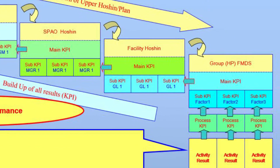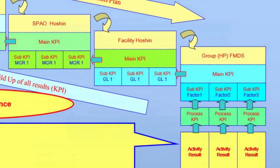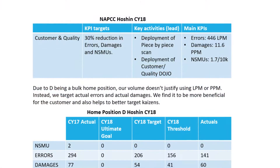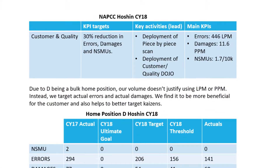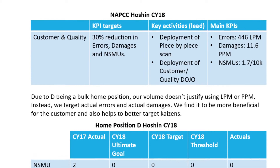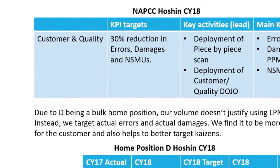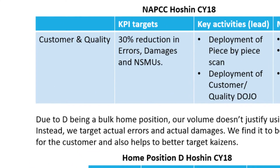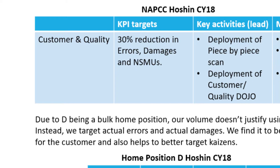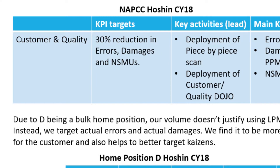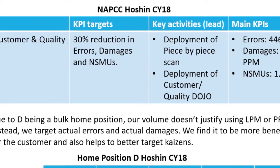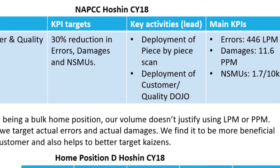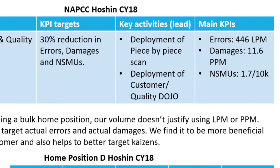You have your main KPI and your sub-KPI. KPI target: 30% reduction in errors, damages, and non-scan MUs. Key activity: deployment of piece-by-piece scan, deployment of customer quality dojo. Main KPI.